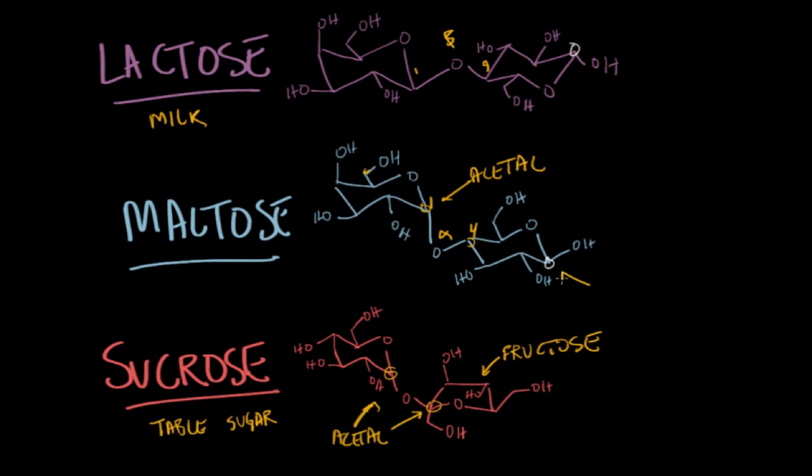With maltose and lactose, you have an acetal right here, and then a hemiacetal on the tail, on the second glucose. That's a hemiacetal. It's the exact same thing for lactose. Remember that with a hemiacetal, you can add on a second OH group to form another acetal.